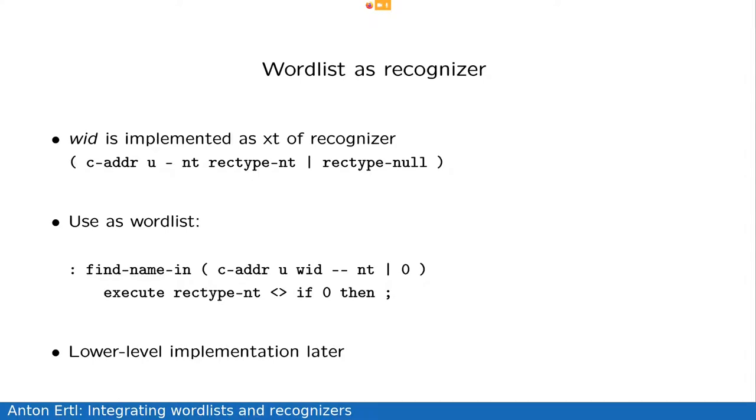So, the first thing I'm going to talk about is one part of treating wordlists as recognizers. So, a wordlist IT is implemented as the execution token of a recognizer, and the recognizer must have this kind of stack effect. So, you give it a string and it returns either an NT and rec-type-NT or it returns rec-type-null. This is the same kind of stack effect as rec-NT does, which is basically the search order recognizer.